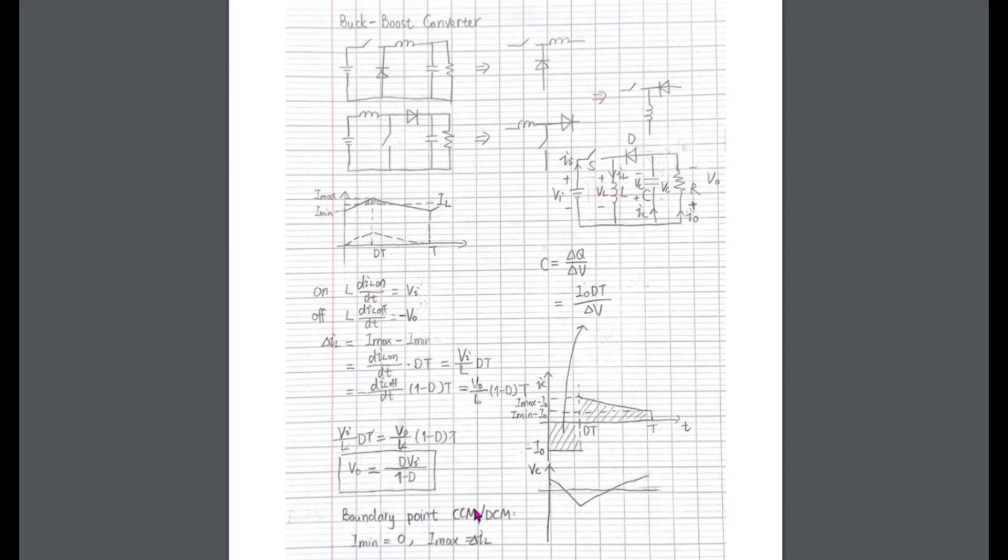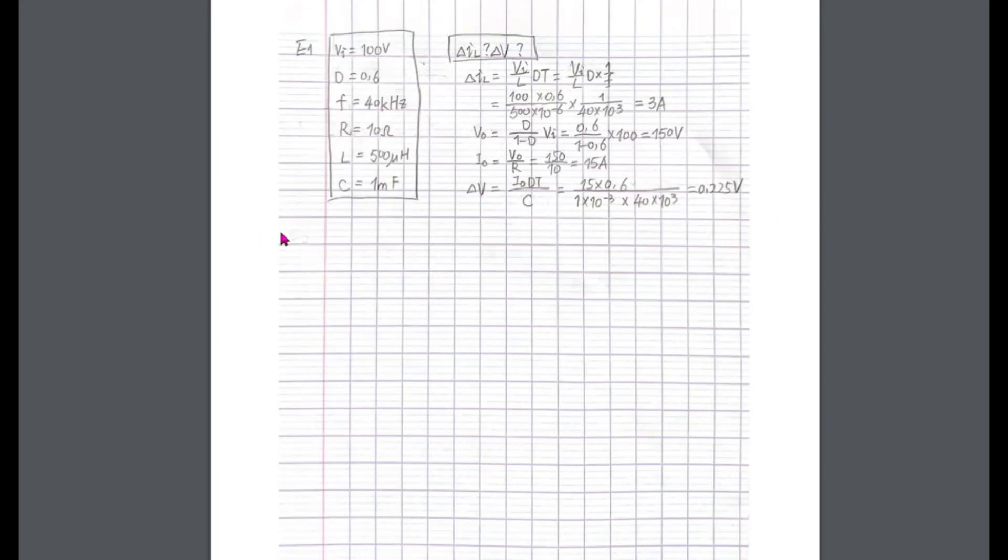We have a boundary point where CCM becomes DCM. At this point the triangular inductor current will reach zero at minimum. The maximum value is the ripple current. Ok, now let's do some exercises.